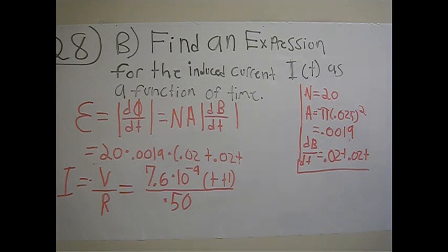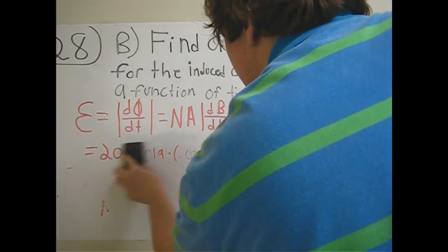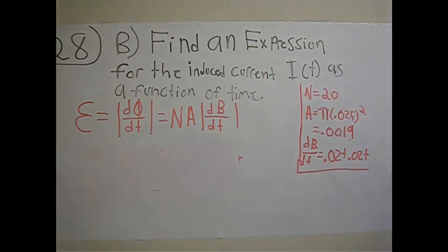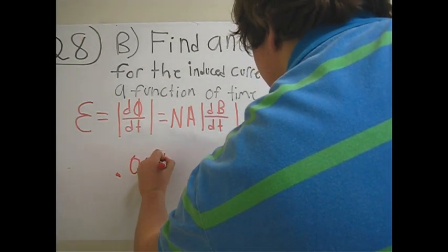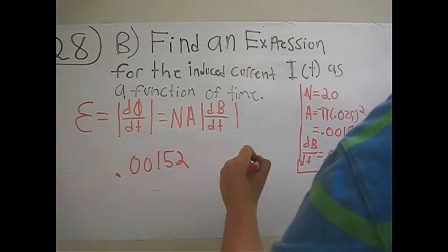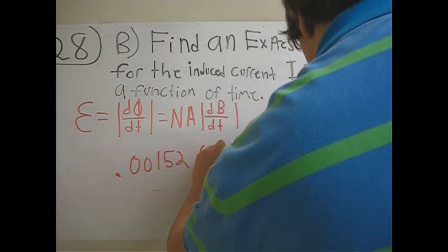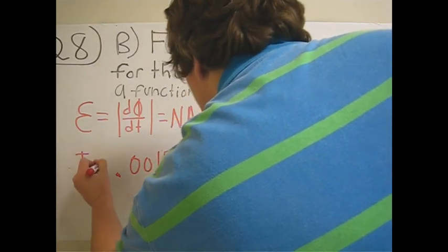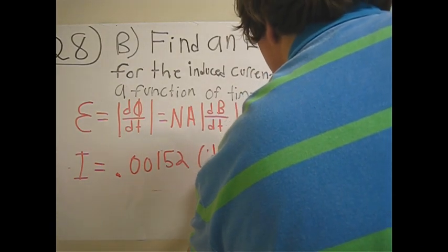Plugging this into your calculator, you can reduce it down to 0.00152(t+1). Sorry, that was t plus 1.